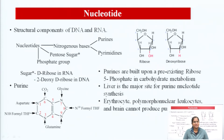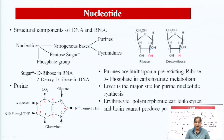A nucleotide contains a nitrogenous base — that is purines and pyrimidines. In purines we have two nitrogenous bases: adenine and guanine. Pyrimidines have cytosine, uracil, and thymine. Uracil is present in RNA, whereas thymine is present in DNA.